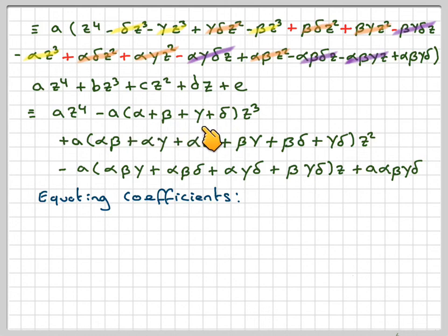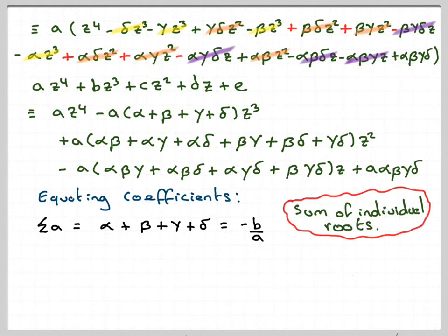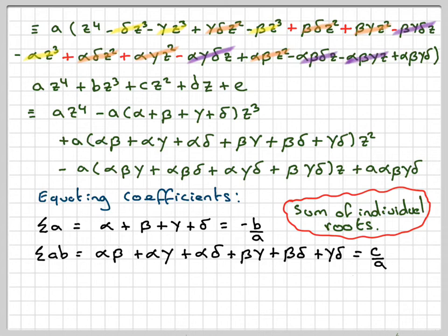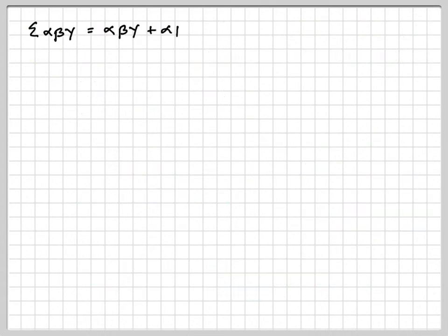The sum of the individual roots alpha + beta + gamma + delta equals minus b over a, because the coefficient of z³ must equal b and there's a minus sign in front. The sum of the products of pairs of roots equals c over a — positive, comparing with c. The sum of the products of roots in threes equals minus d over a, because it's minus this term. That notation covers those combinations.